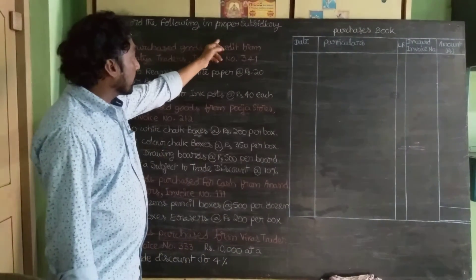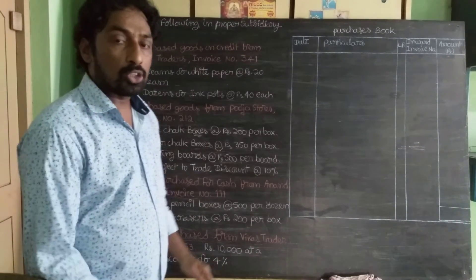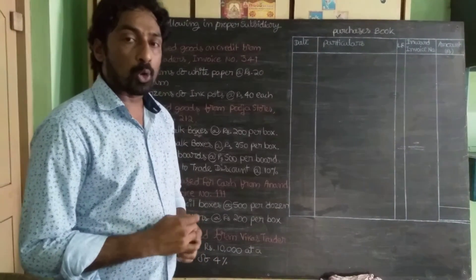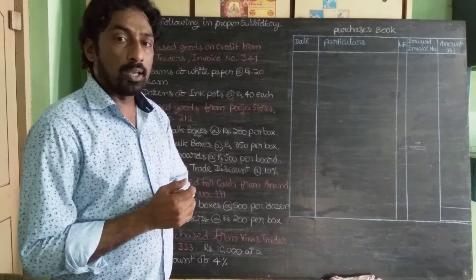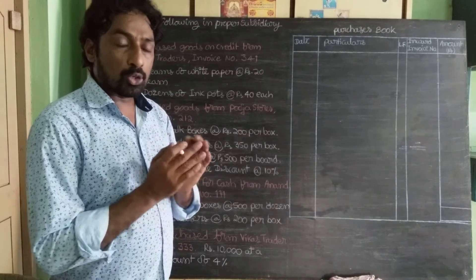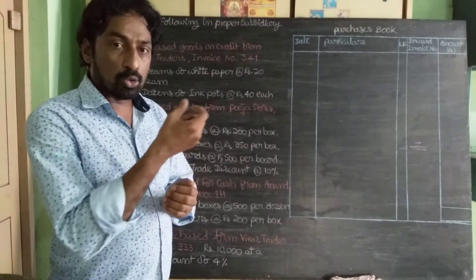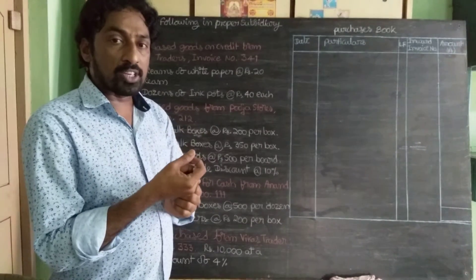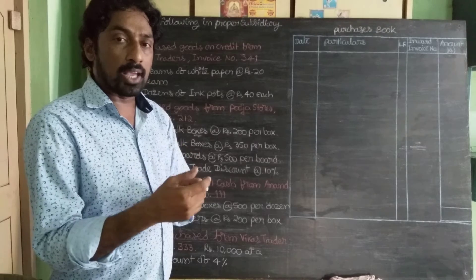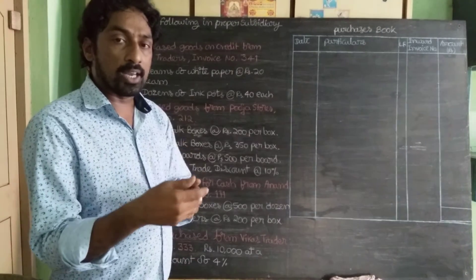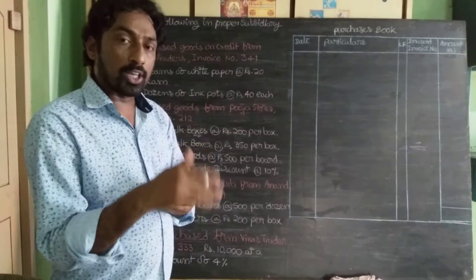Record the following in the proper subsidiary book. 'Proper' means identifying which book the question is related to. Each transaction gives information about what book to use — whether it is the purchase book, sales book, purchase returns, or sales returns. Total 4 books are commonly referenced.